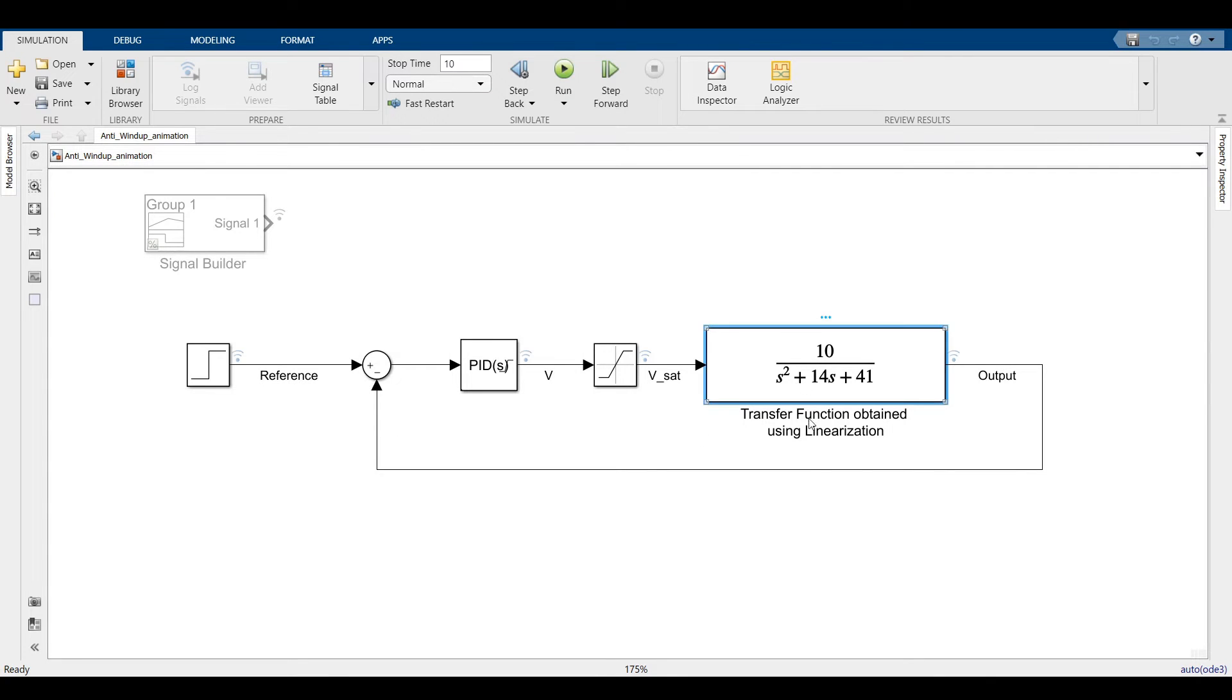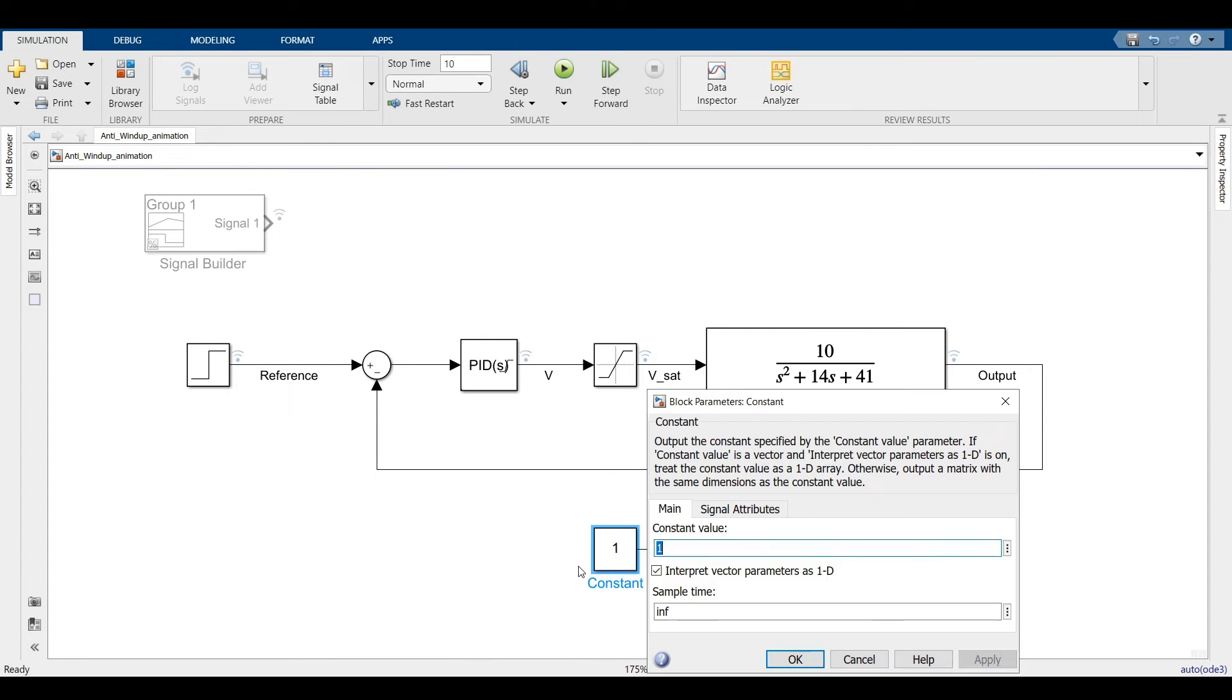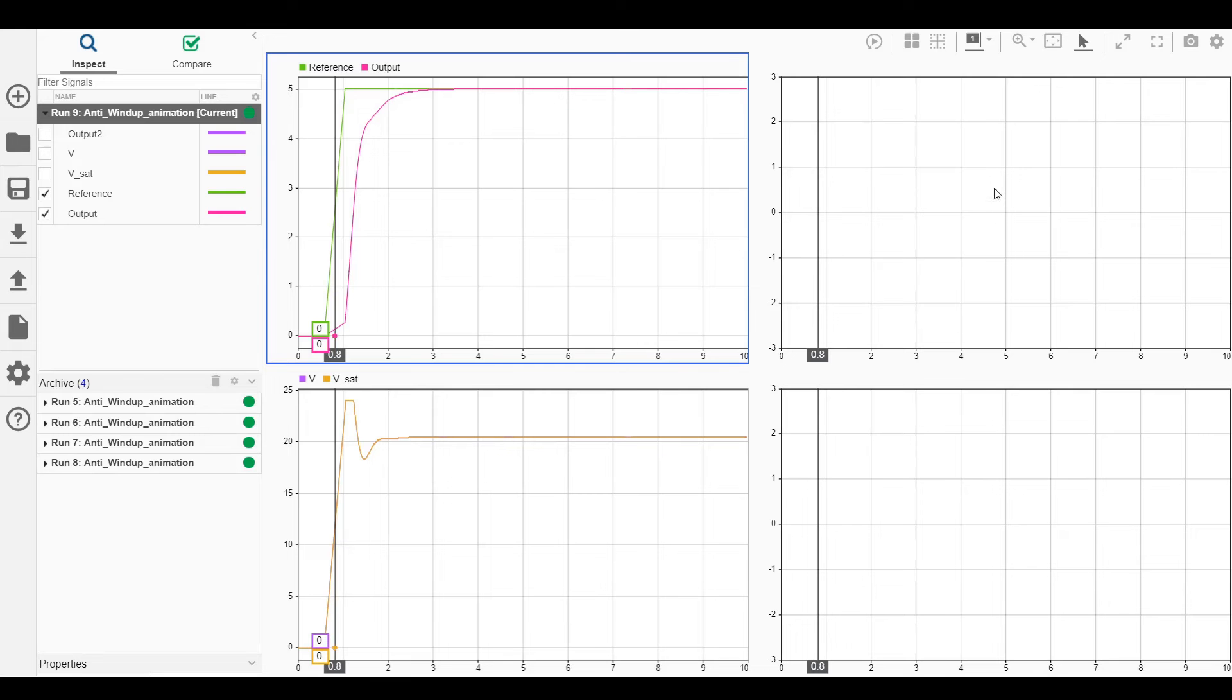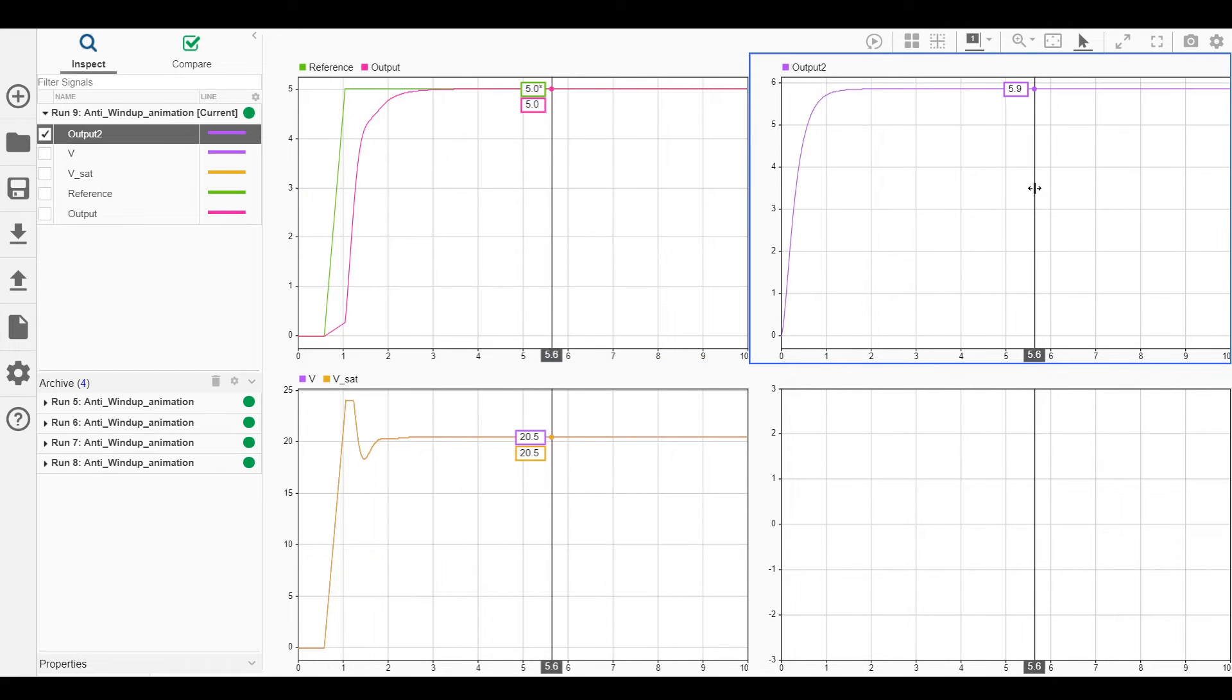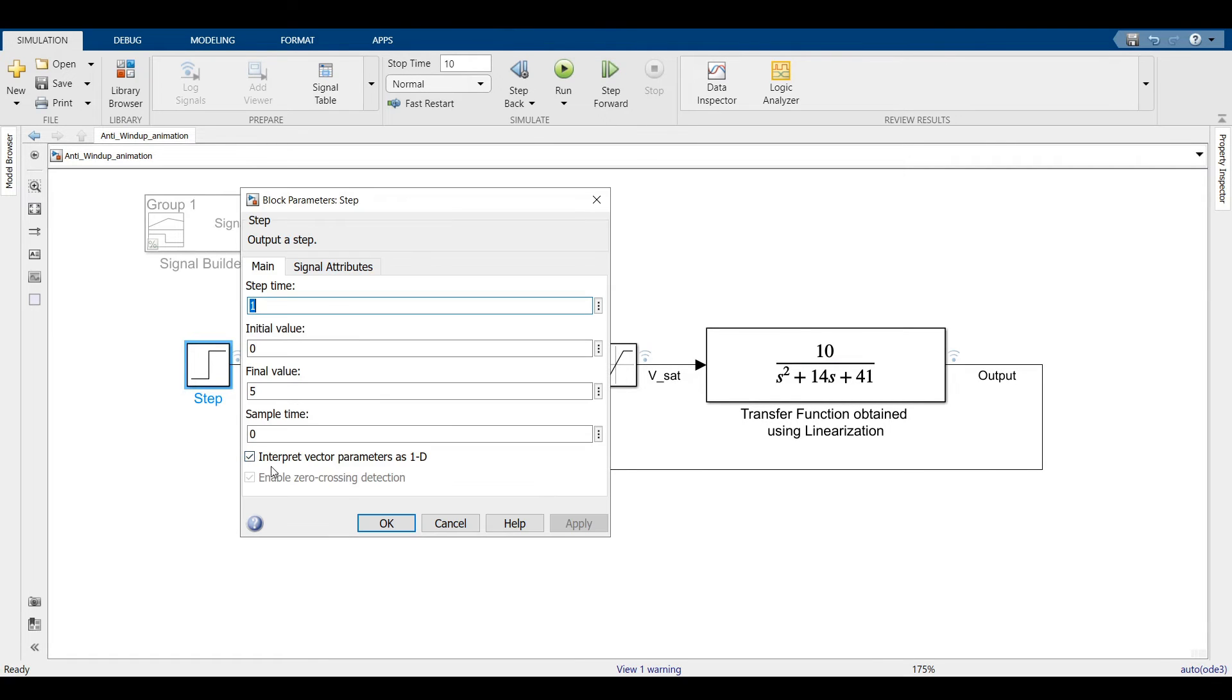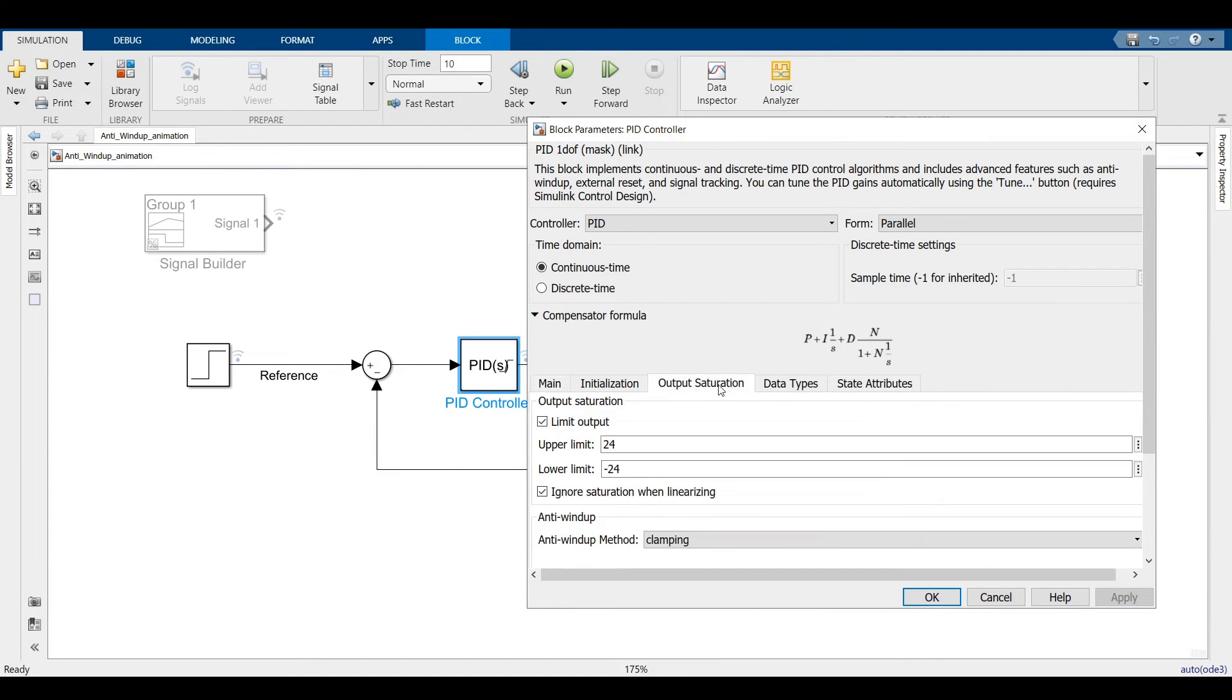There is one more case where the anti-windup is needed. Let us quickly check what is the top speed of this motor. I will give a 24V supply to the motor, run the simulation and we notice that the maximum speed possible is 6 radians per second. But what if I did not know this value? What if I actually commanded the speed reference to 10?